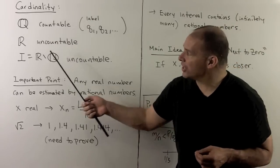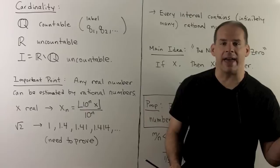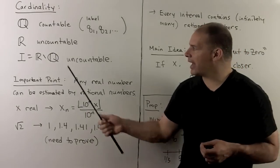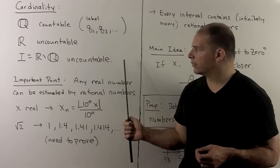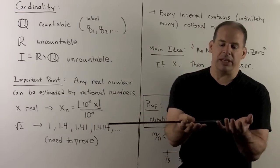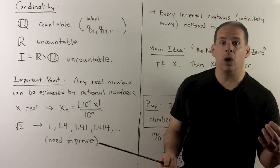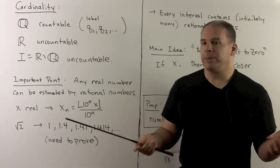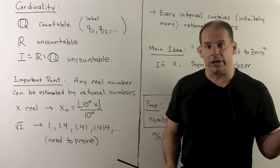On the other hand, we've seen, using a diagonalization argument, that the reals are an uncountable set. So, that means the irrationals are also uncountable since we're just discarding a countable subset. Now, that means on the real line, the rationals are vastly outnumbered by the irrational numbers.